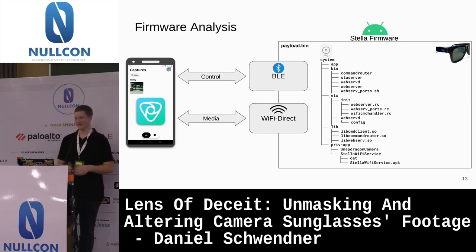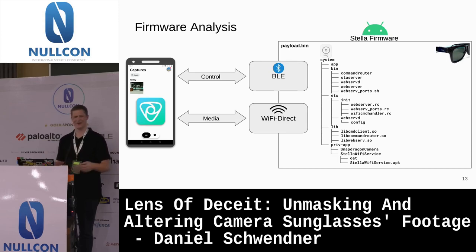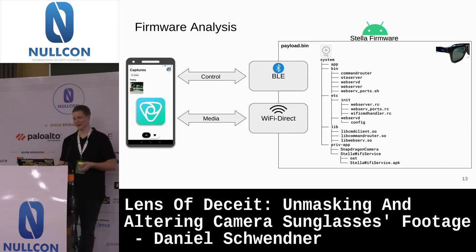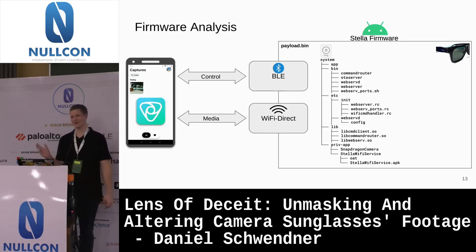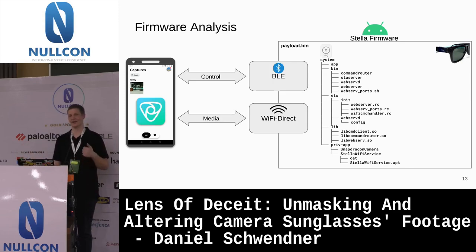The sunglasses are running full Android and the codename internally appears to be Stellar. From the system partition I found some binaries like command, router, OTA server, and web server, along with web server configuration files and port settings. There are also binary libraries — probably native libraries accessed via Android's JNI interface from apps. There's also a privileged app called Stellar Wi-Fi Service, which is really interesting for understanding how the Wi-Fi service is configured.